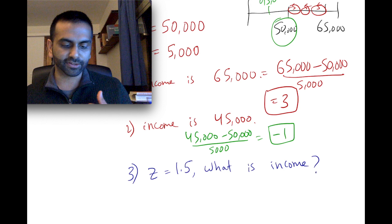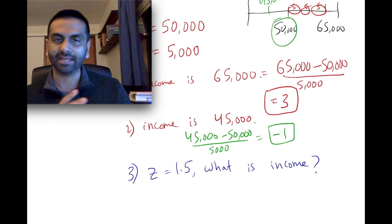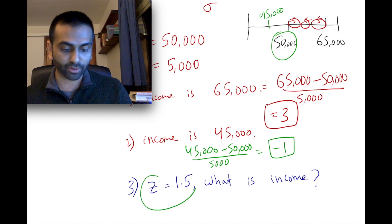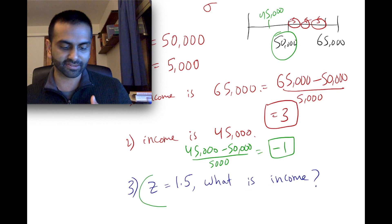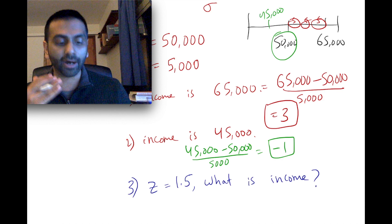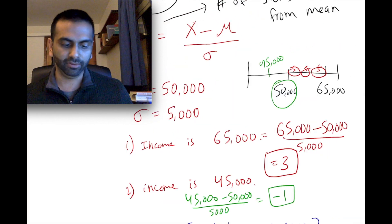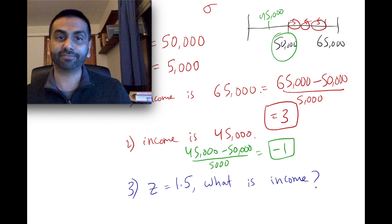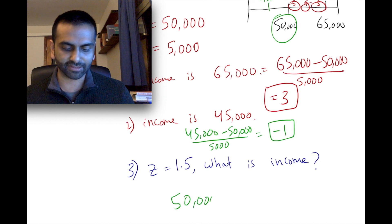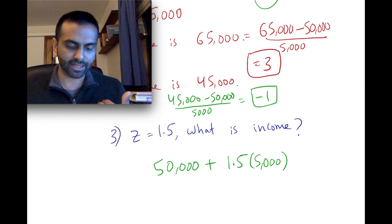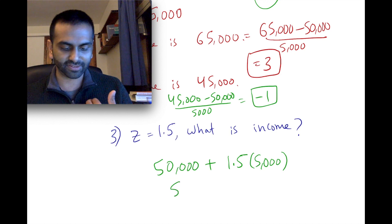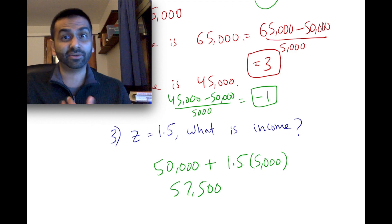You can also work in the other direction. Given the average is $50,000, sigma is $5,000, and your z-score is 1.5, what is your income? Since z is positive, you're above the mean. Each sigma is $5,000 and you're 1.5 of those sigmas above, so 1.5 × $5,000 = $7,500. Your income is $50,000 + $7,500 = $57,500. That's how you can use the z-score.